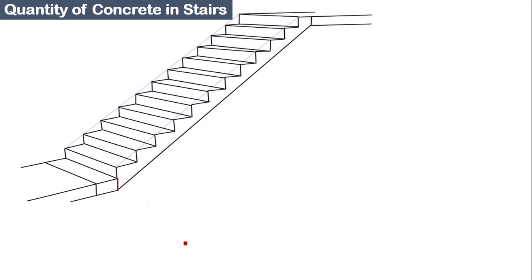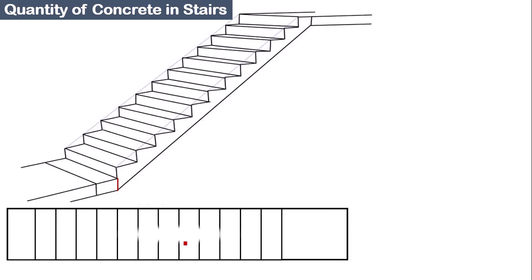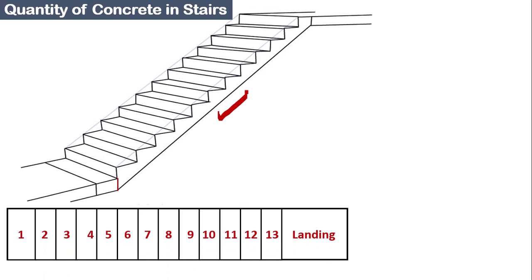This is the elevation — the front view or side view of the stairs — just to give you an idea of how these stairs look. And this is the plan of the same stair. There are a total of 13 steps, numbered one through thirteen, and then there is a landing, as you can also see in the plan view.